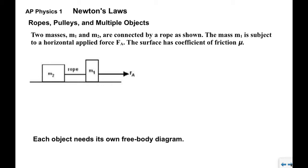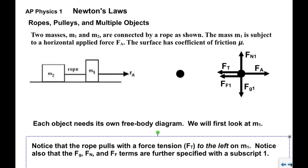First we need a free body diagram for each object, so we'll start with M1. Some of these things you've seen already: we know that Fa goes on the free body diagram.